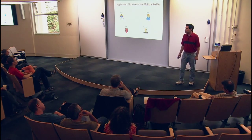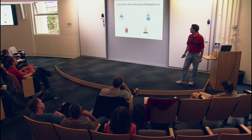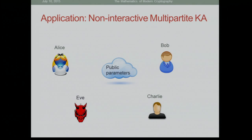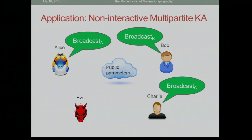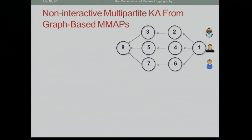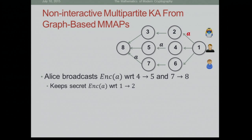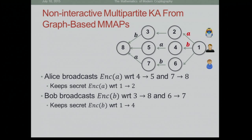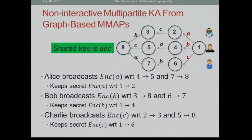Here is a simple application: non-interactive multipartite key agreement with three parties — Alice, Bob, and Charlie. There are public parameters that everybody knows, including the attacker Eve. Each party independently broadcasts something, and once everybody has heard all broadcasts, they can agree on a secret key, whereas Eve, even knowing the public parameters and all broadcasts, doesn't know the key.